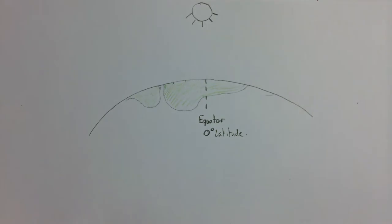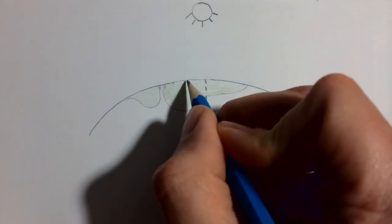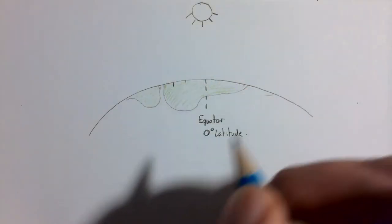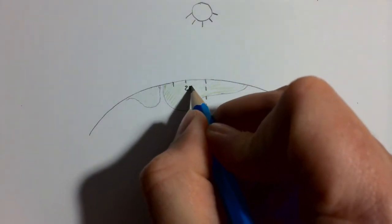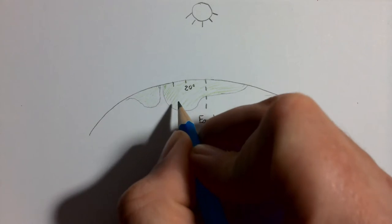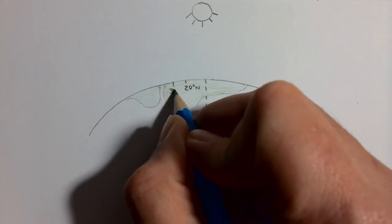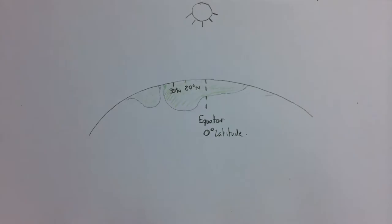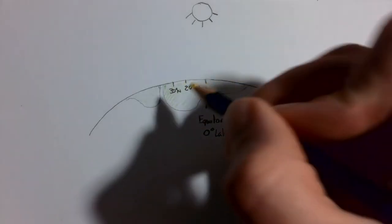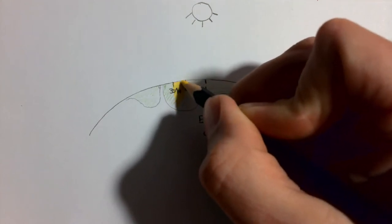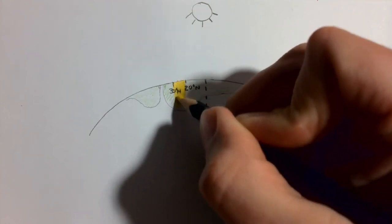What we're interested in are the 20 degrees to 30 degrees north and south. So that's 20 degrees north and 30 degrees north. And it is between these two lines of latitude that we find our hot deserts on planet Earth.